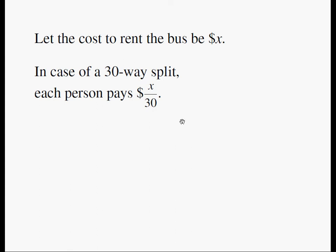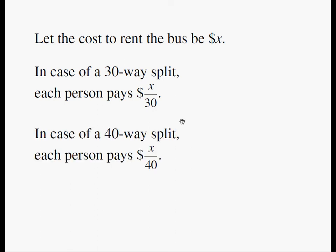Let's see what happens if 40 people are traveling. Well, if 40 people are traveling, obviously each person pays X over 40 because you divide the total cost by the total number of people. That's exactly what you did here, divided the total cost by the total number of people.